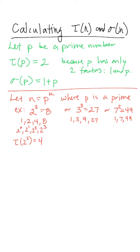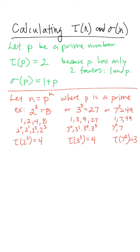There are four of those factors, so tau of 2 to the third power is 4. I can see that it's 4 by looking at the first, second, third powers and then adding one more for 2 to the 0. In the same way, tau of 3 to the third, which is 27, is also 4. I could write those factors as 3 to the 0, 3 to the 1, 3 to the 2, and 3 to the 3. With 7 squared, which is 49, there are three factors: 7 to the 0, 7 to the first, and 7 to the second.